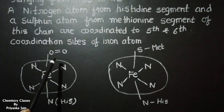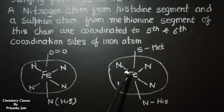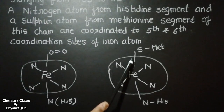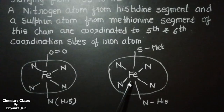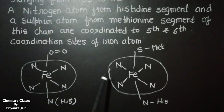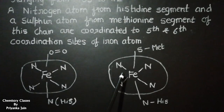In cytochrome c, the four coordination sites are occupied by the four nitrogen atoms of the pyrrole rings of the porphyrin ring, the fifth position is occupied by the nitrogen of the histidine residue, and the sixth position is occupied by the sulfur of the methionine residue. All six positions are now completely coordinated, meaning there is no available site in cytochrome c for further coordination — so it cannot coordinate with or react directly with oxygen.